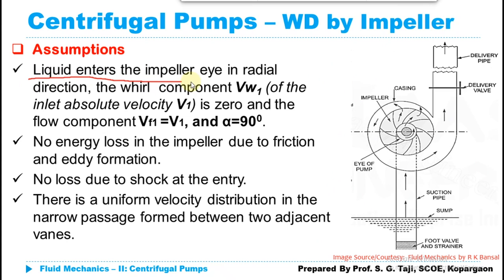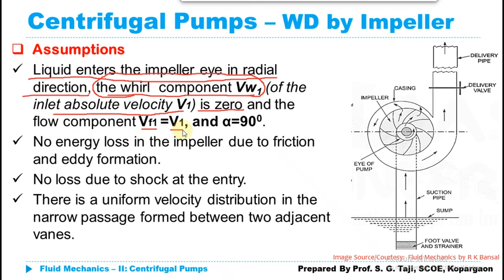The first assumption: liquid enters the impeller eye in the radial direction. If it enters radially, then the whirl component of velocity VW1 at inlet velocity V1 equals zero, and the velocity of flow equals V1. This means alpha equals 90 degrees. So whenever we draw the velocity triangle, alpha is equal to 90 degrees at inlet.